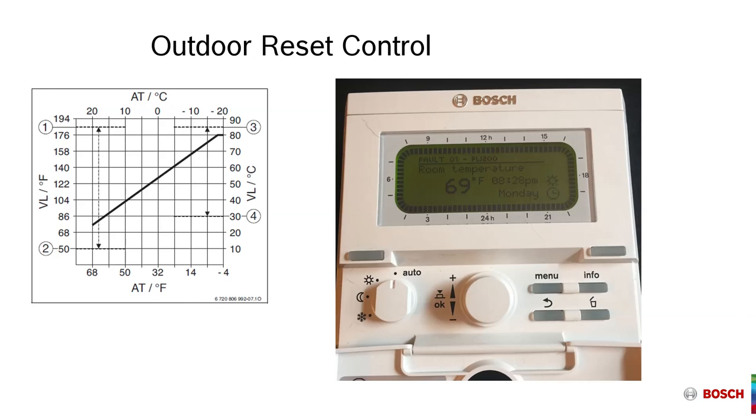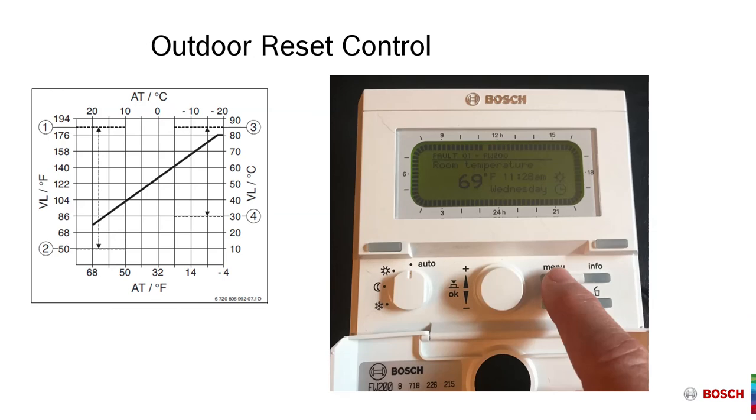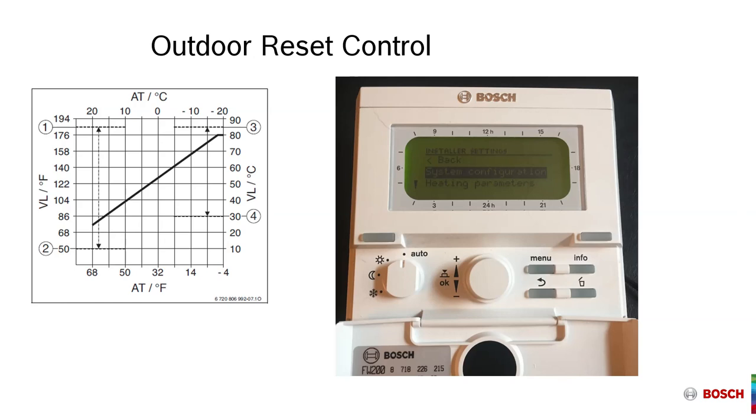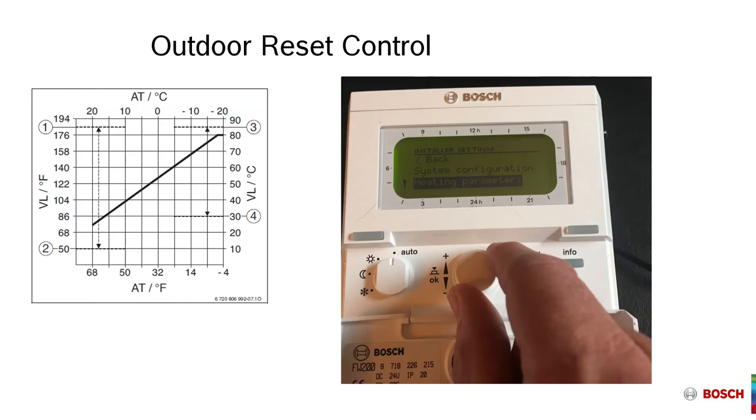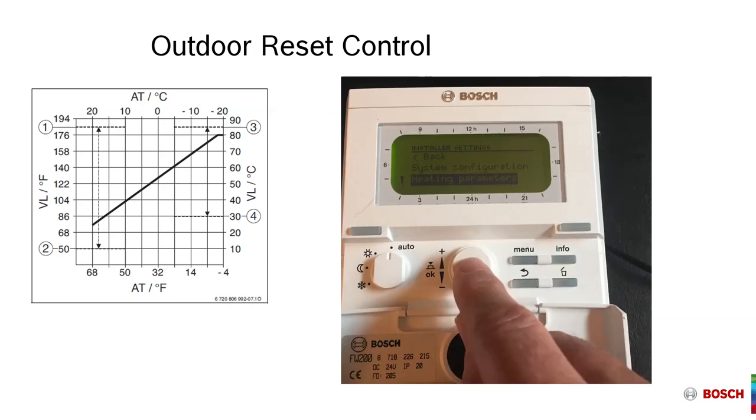Menu button allows us access to setup information. Pressing the menu button for approximately five seconds will bring up system configuration. We're going to scroll down to heating parameters, and heating parameters is where we can now adjust our baseline temperature, or that starting supply temperature. Heating parameters, selecting heating parameters, pressing in.